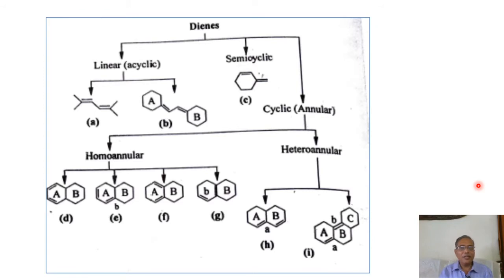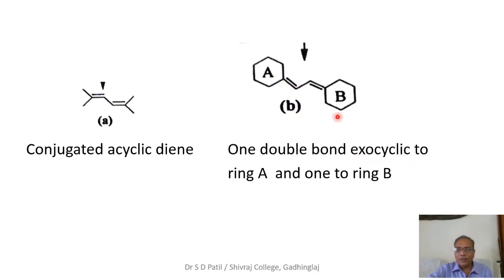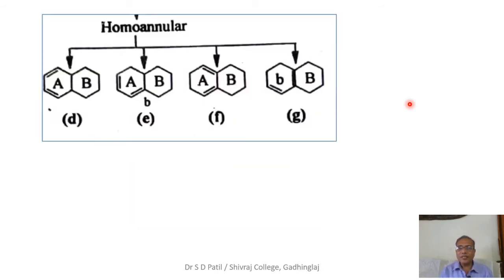For convenience, let us revise these briefly. The first structure A is an acyclic conjugated diene. The second structure B is also an acyclic diene, but it has exocyclic double bonds — one double bond is exocyclic to ring A and the other double bond is exocyclic to ring B. This is an example of a semi-cyclic diene, where one double bond is inside the ring and the other is outside.